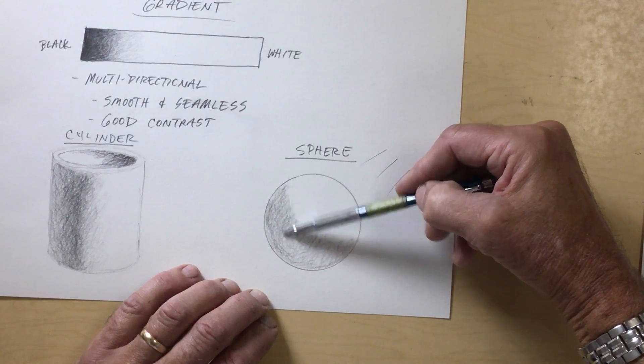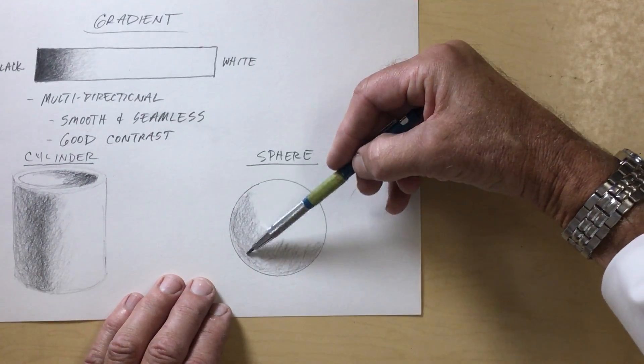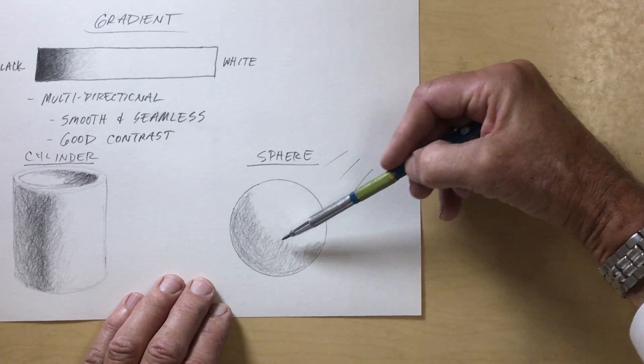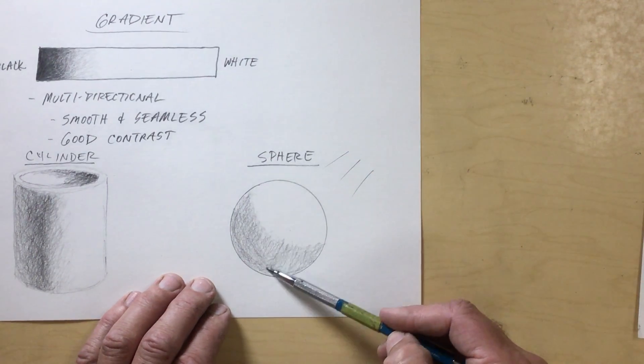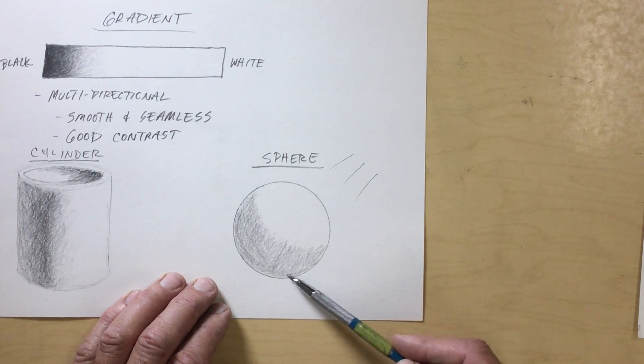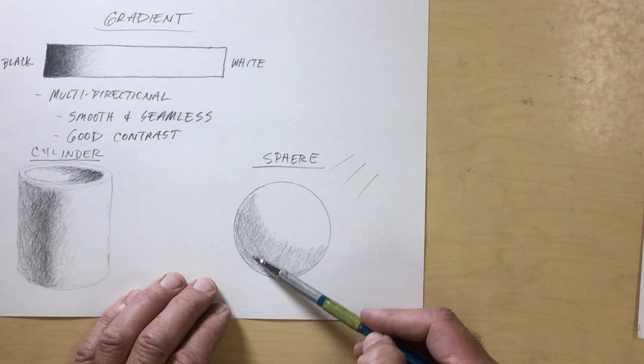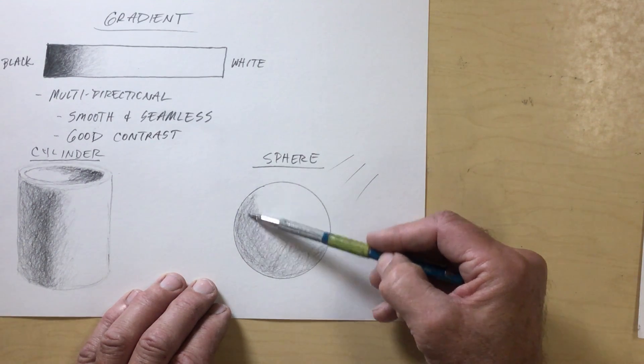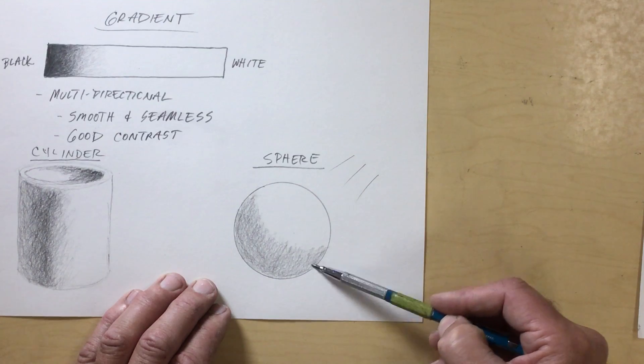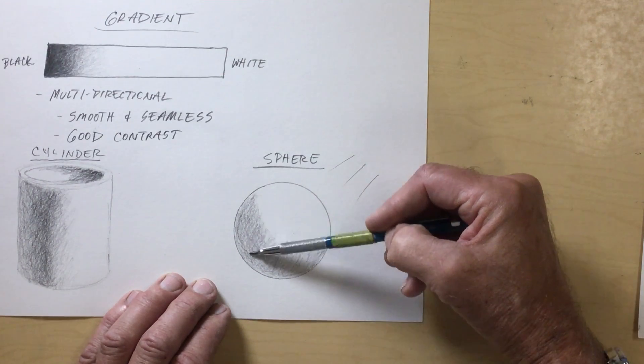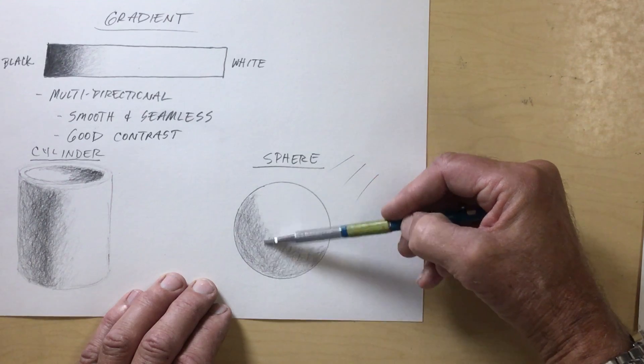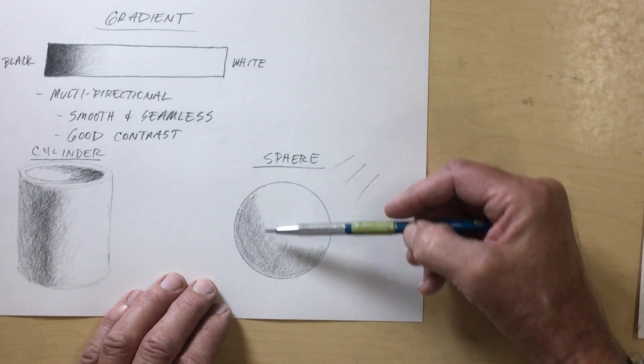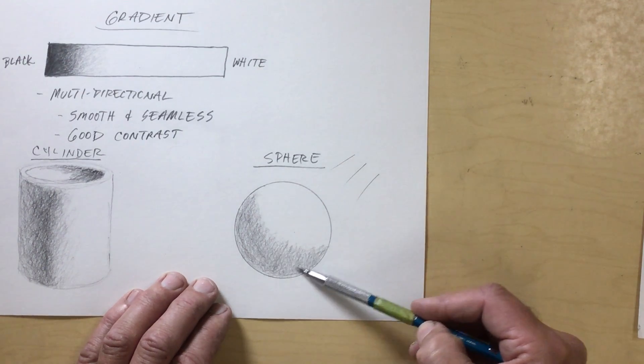The brighter the light source, the more defined that edge is. The more diffused the lighting—say you're outside on a cloudy day—the more that gradient would slowly fade out. But when you have a bright light source, and we're kind of creating the illusion of a bright light source because that's the way your still lifes are lit, we are going to have a fairly distinct edge, but it still is going to be blurred.